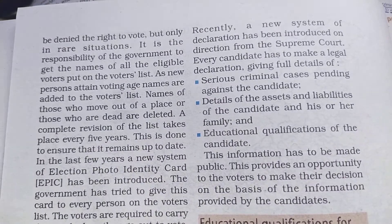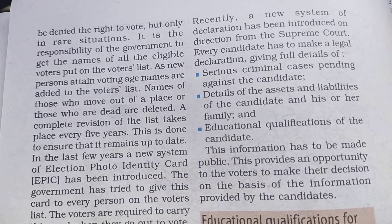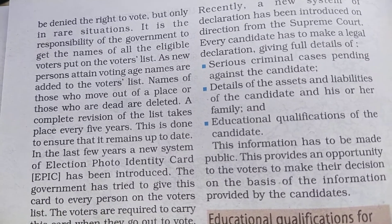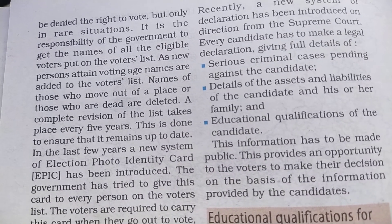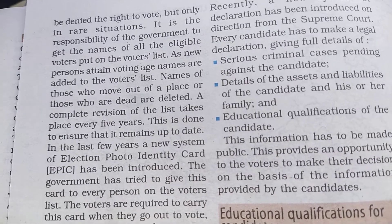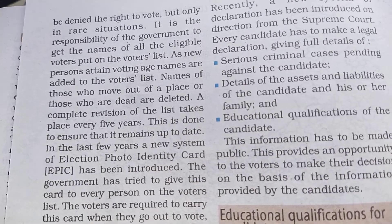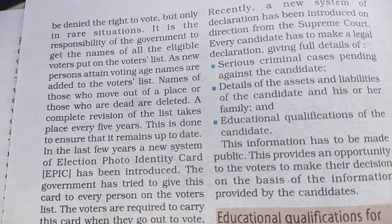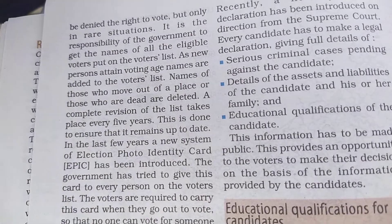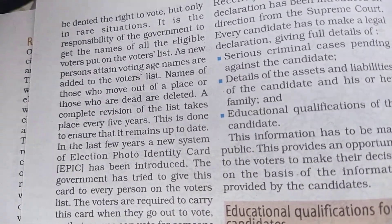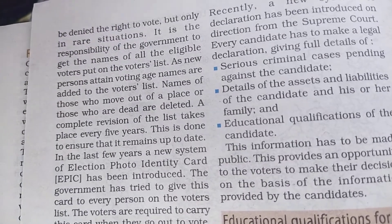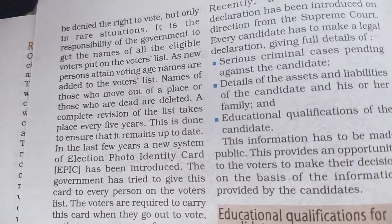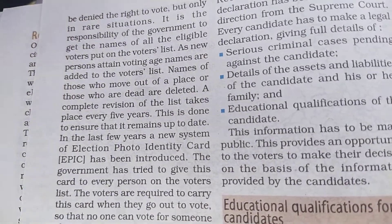A person with criminal cases or an unsound mind may be denied the right to vote, but this is a very rare situation. The voters list is updated after every five years — people who have turned 18 are added, and those who have passed away are removed. Preparing this new and fresh list is a mandatory task.